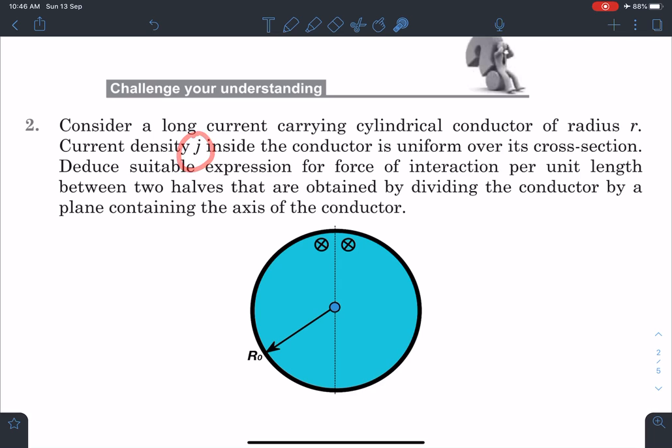Suppose this j is given as a function of r. Here j is given constant; they can give j as a function of r. That problem will be slightly challenging. Here there is one more approach we can use, that is using the concept of magnetic pressure.